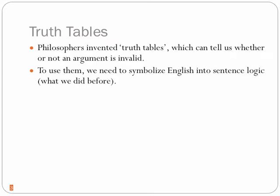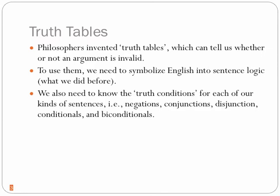Truth tables will give us an answer to any argument we present to ourselves. We can use a truth table to figure out if an argument is valid or not. The first thing we need to know to use them are the truth conditions for each of our connectives — for negations, conjunctions, disjunctions, conditionals, and biconditionals. Let's start with the truth conditions for negations.